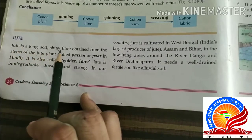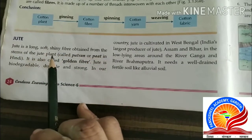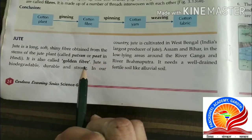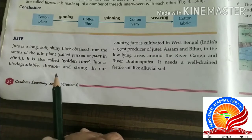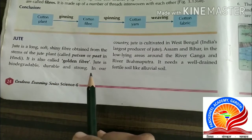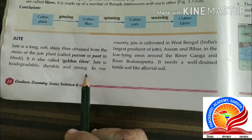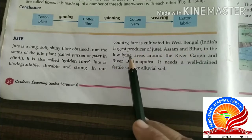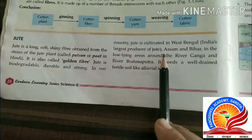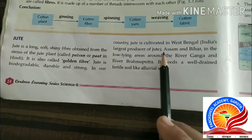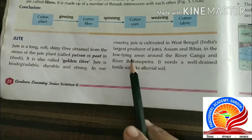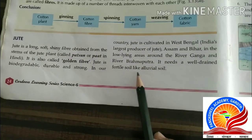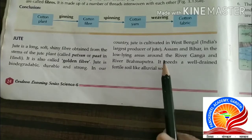Jute is long, soft, and shiny fiber obtained from the stems of the jute plant called Patson or Par in Hindi. It is also called a golden fiber. Jute is biodegradable, durable, and strong. In our country, jute is cultivated mainly in West Bengal — India's largest producer of jute — as well as Assam and Bihar, in the low-lying areas around the rivers Ganga and Brahmaputra. It needs well-drained fertile alluvial soil.